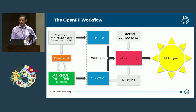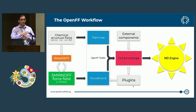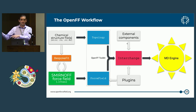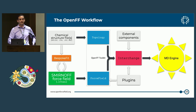To enable force field research, we have a plugin ecosystem so people can put in custom functional forms or replace part of the functional form with something they're experimenting with. We have a plugin interface for both the force field class and Interchange. Interchange can also load a limited number of externally parametrized components — so if you parametrize something in Amber or using Foyer, there's a reasonable chance that Interchange can import that and combine it with SMIRNOFF parametrized components.